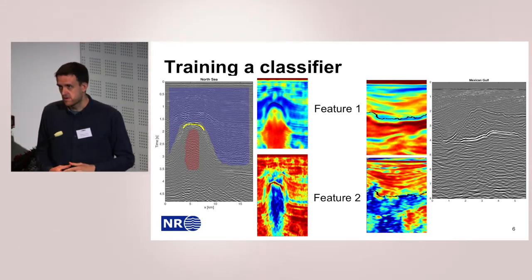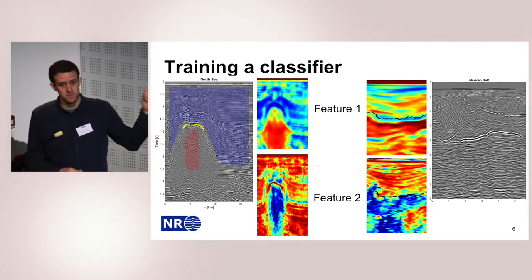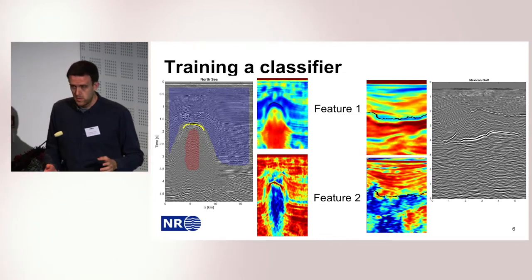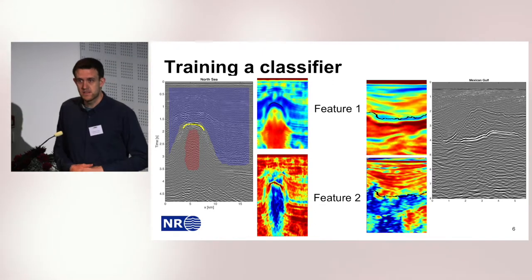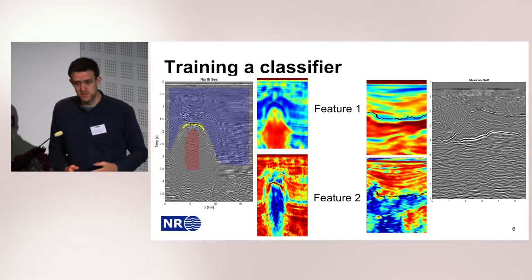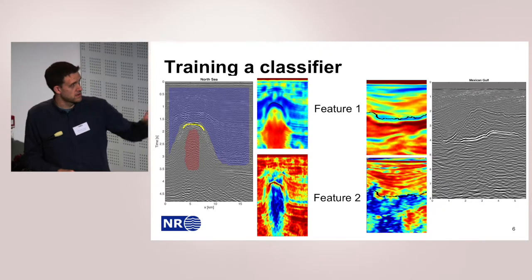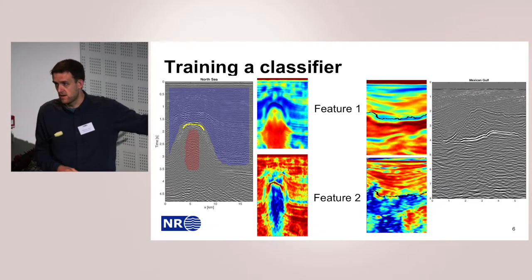Sometimes we need experts to do this transition. Sometimes we have some physics that can take us from the input to the output. But when the physics is unknown, or if the experts are expensive, or the interpretation is boring, then we can try to solve this with machine learning. The goal of machine learning is to figure out the relationship between the input data and the output data.